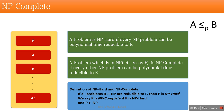Now, what is NP-hard? If there is a problem E such that every problem in the NP class can be polynomial-time reducible to problem E, then problem E is called NP-hard. This means if we have an algorithm to solve an NP-hard problem, that algorithm can be used to solve every NP problem.